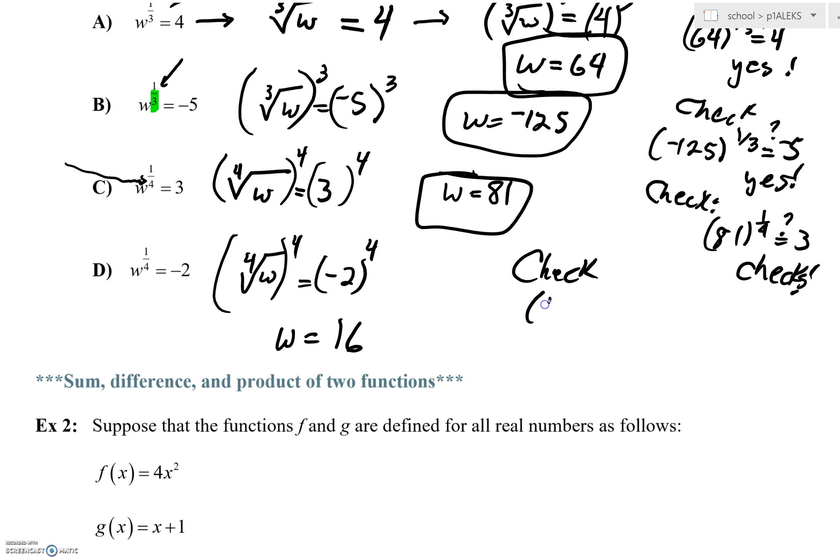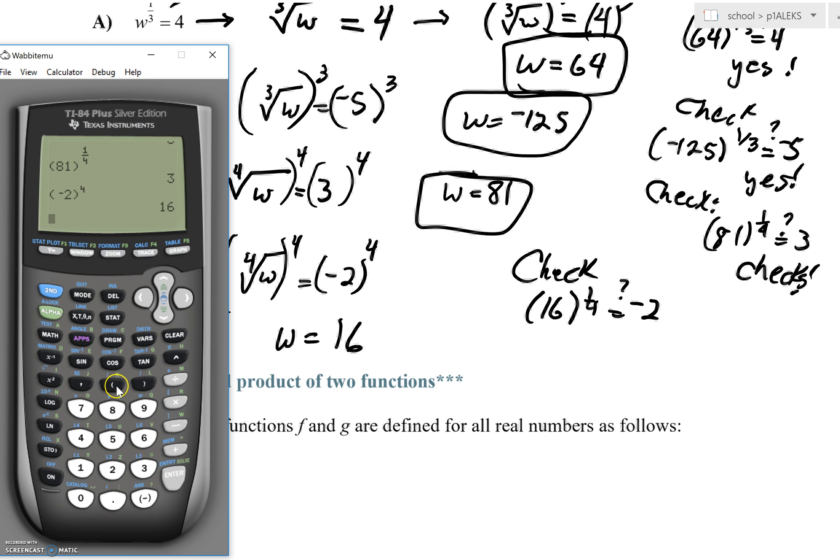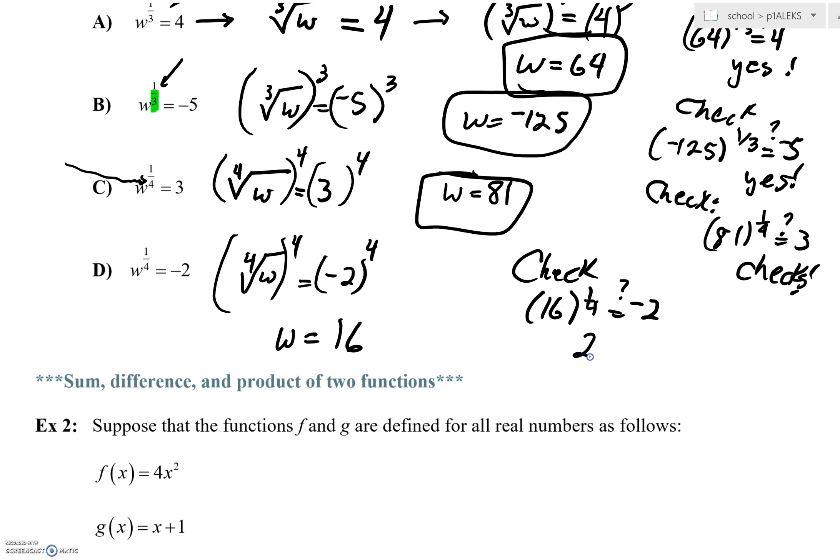You see, as we check that, we'll have 16. We're going to bump that up to the one-fourth power. Is that going to equal negative 2? Well, let's see. We'll have 16, raise that up. And we're already hearing no. It's not. You know, 16 to the one-fourth is actually a 2. 2 is not equal to negative 2. So, what's our answer? No solution. It's going to be no solution.